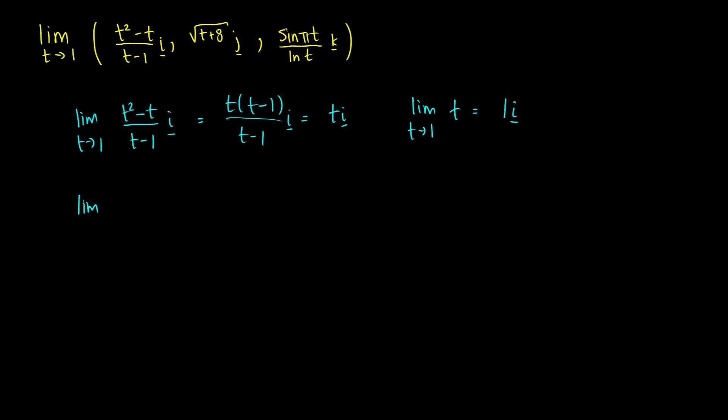For the limit as t approaches one of the square root of t plus eight times the vector j, we can just plug this in very nicely. So this will be the square root of one plus eight j, which gives us the square root of nine j, which would just be three j.